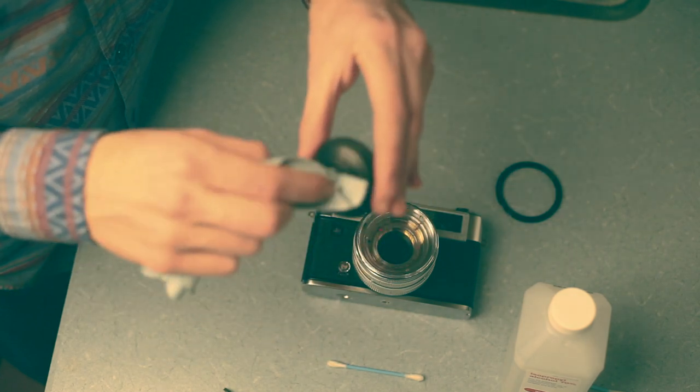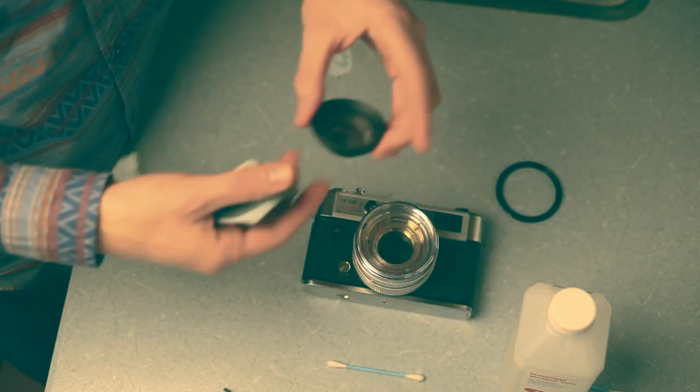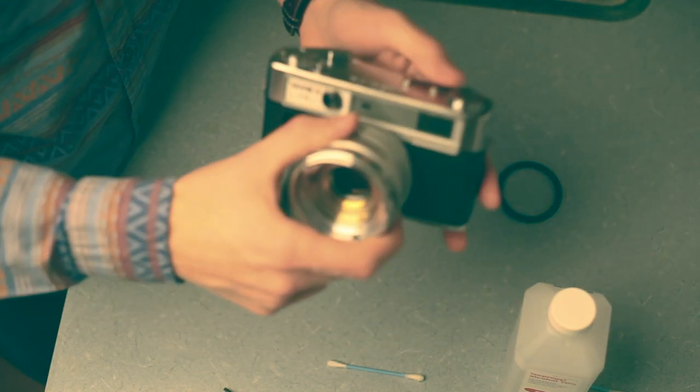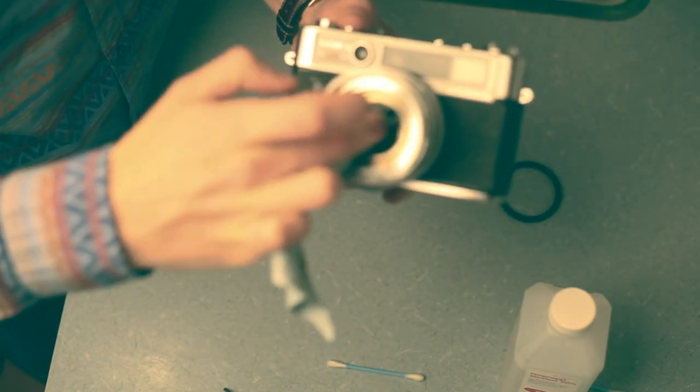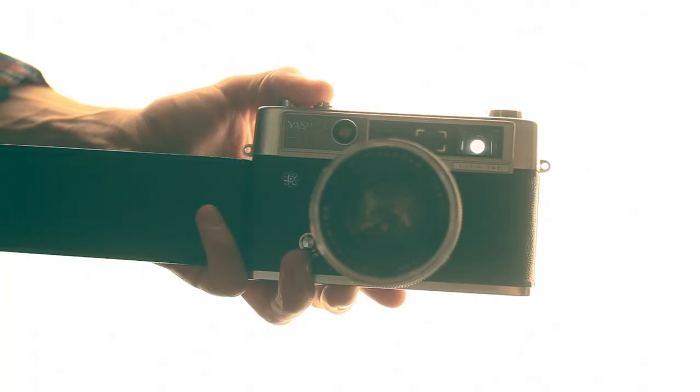Now you're going to take the lens cloth, clean the element, rinse, wind back the shutter, and then open it, clean the inside, and then you're done.